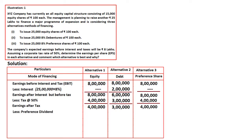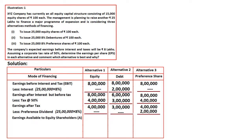From earnings after tax, we deduct preference dividend. In Alternative 1, there is no preference dividend. In Alternative 2, there is no preference dividend. In Alternative 3, we are raising ₹25 lakhs through preference shares at 8%, so preference dividend = 25 lakhs × 8% = ₹2 lakhs. After deducting preference dividend, we get earnings available to equity shareholders: Alternative 1 = ₹4 lakhs, Alternative 2 = ₹3 lakhs, Alternative 3 = ₹2 lakhs.